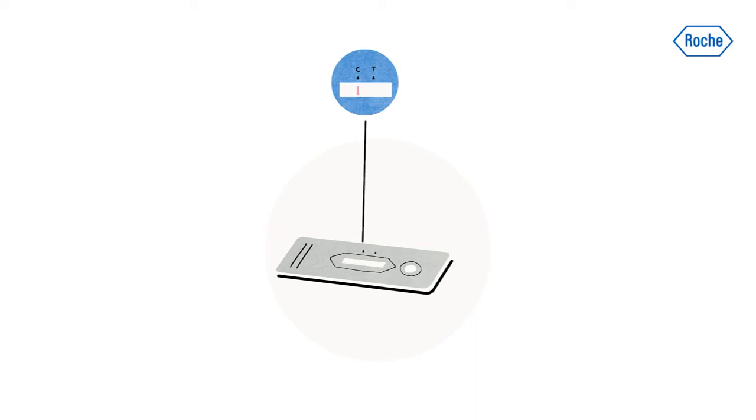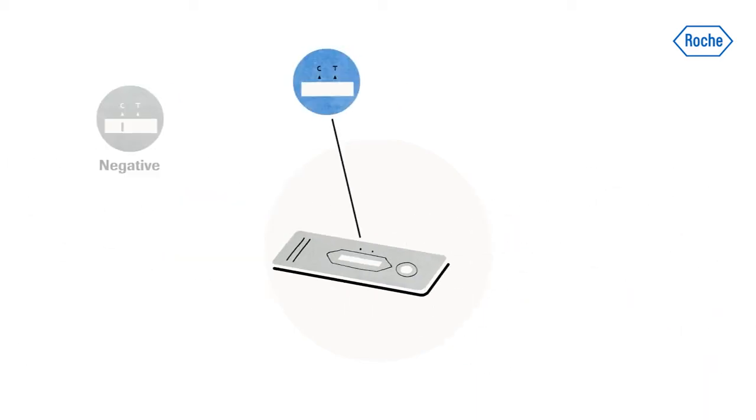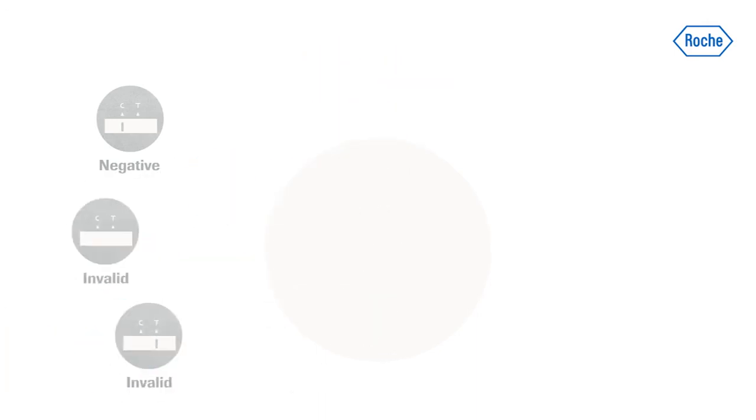If the control line C is the only visible line, the test is negative. If no control line C is visible, the result is always invalid and the test should be repeated using a new device.